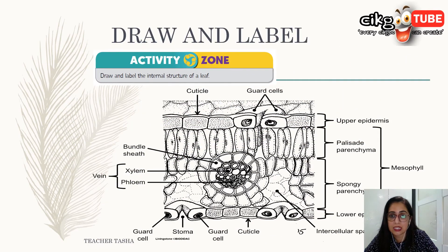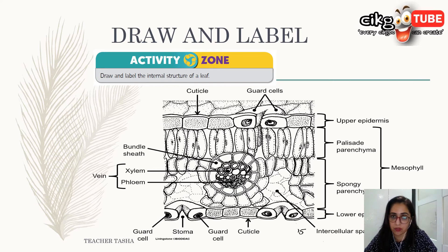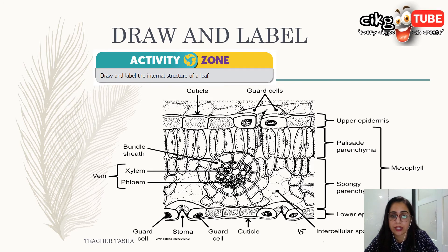This is the activity zone — you must draw and label the internal structure of the leaf. By doing so, you will remember where the cuticle, epidermis, palisade mesophyll, spongy mesophyll, stoma, guard cells, and vascular bundle are located and how to draw them. Make sure this diagram, drawn by you, is in your notes.